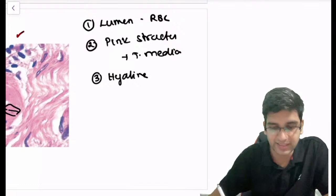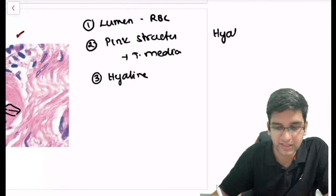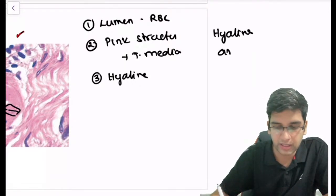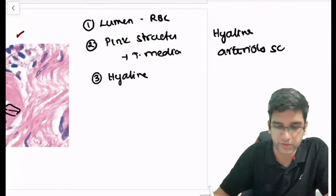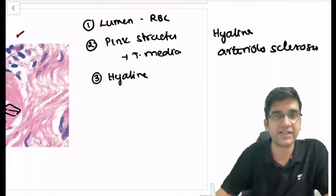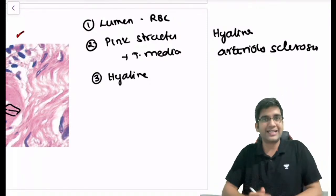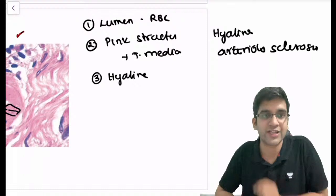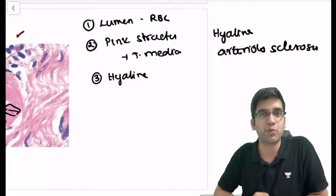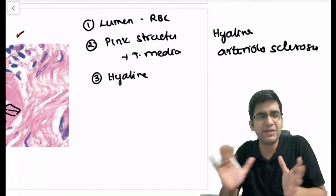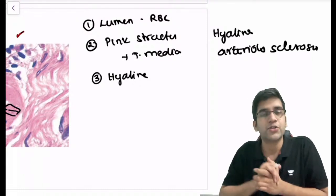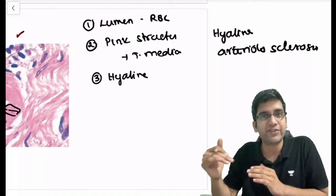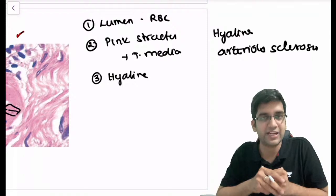Combining everything: I said it's an arteriole, and I'm having a hyaline-like deposition causing sclerosis — so this is a classical case of hyaline arteriolosclerosis. This is a very very important and very basic term.